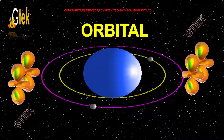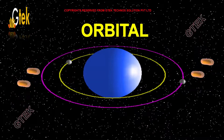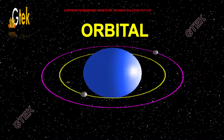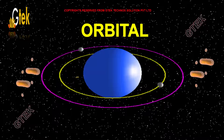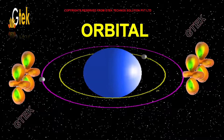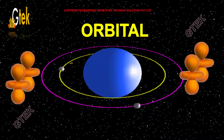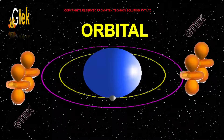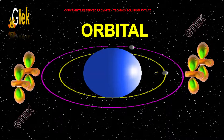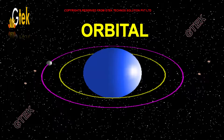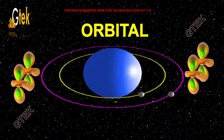Here is the orbital. We are going to look into the orbitals. You can see a solar system is running. Orbital is like a solar system.